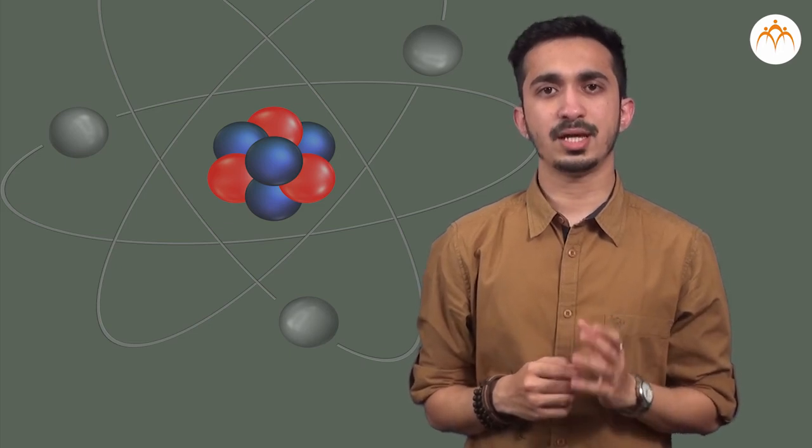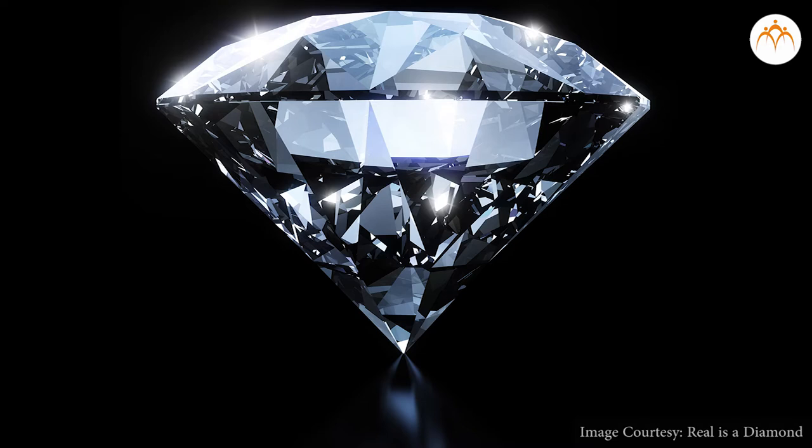As non-metals are brittle, they are not hard. But diamond is the hardest natural substance. Diamond is an allotrope of the non-metal carbon element, which is the exception to this property.